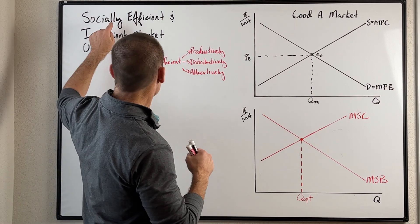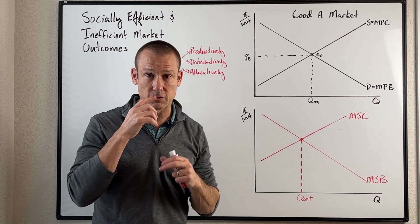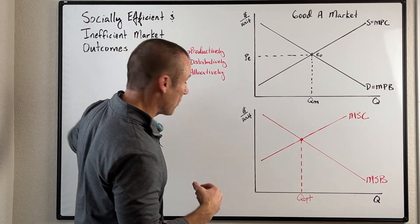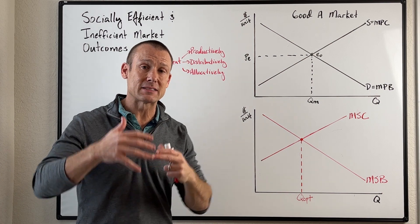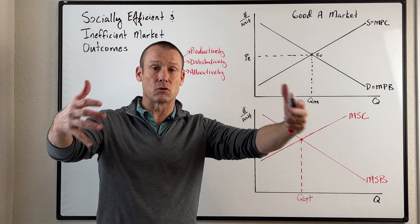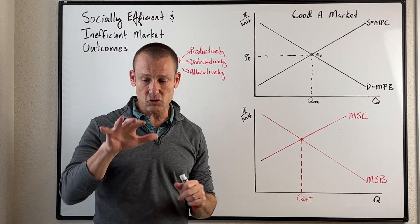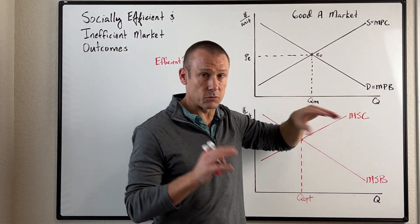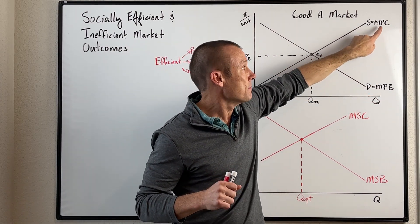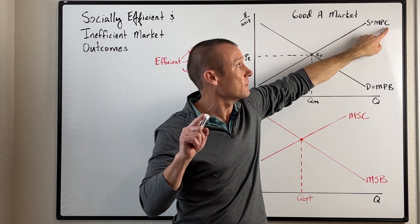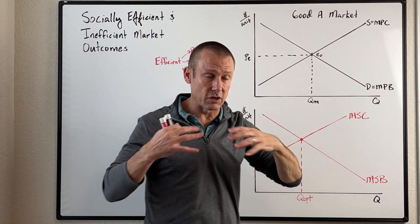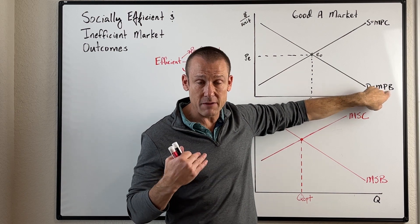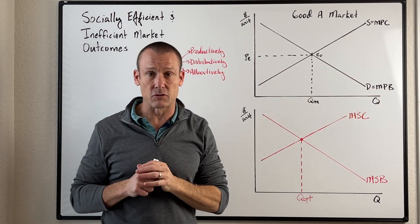Now let's talk about social efficiency. What we mean by a socially efficient market outcome is that we've maximized societal well-being. Markets involve decentralized suppliers making decisions based on their private costs and self-interest, and decentralized demanders making decisions based on their private benefits and self-interest.